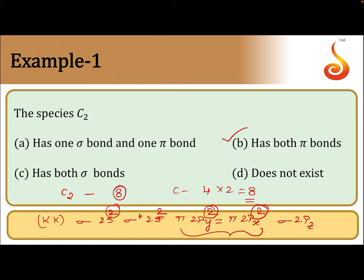That is why C2 exists only in vapor phase. Generally, double bond means it should be 1 sigma and 1 pi. But if you see the molecular orbital order, the last 4 electrons are present only in pi molecular orbitals, so only pi molecular orbitals are involved in bonding. It is an exceptional case — both the bonds are pi bonds because the 4 electrons are present in 2 pi molecular orbitals. In all other cases, if the bond order is 2, one bond should be sigma and the other should be pi. But in carbon, it is exceptional — both are pi bonds.